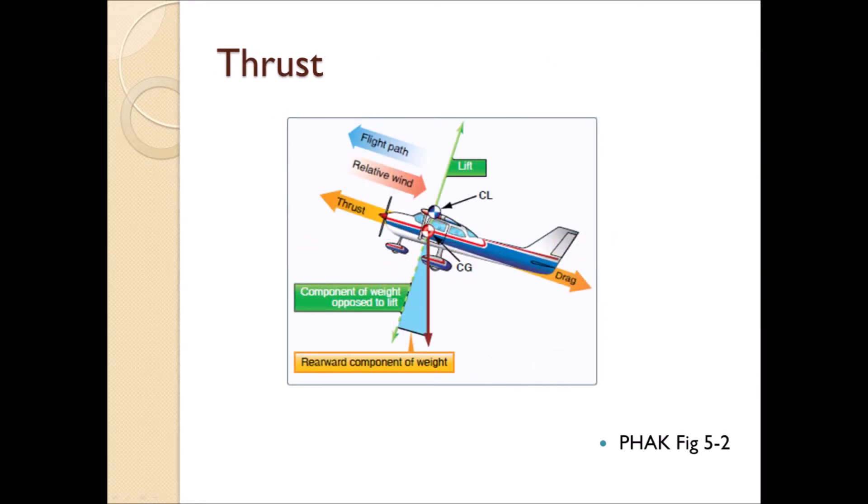For an aircraft to start moving, thrust must be exerted and be greater than drag. It will accelerate until drag plus thrust equals zero, which is when the airspeed is constant. If the drag is greater than the thrust, then the aircraft will accelerate.